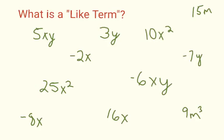The first thing we want to understand before we tackle any examples is the definition of a like term. Here I've listed a bunch of terms scattered around the screen, and we're going to identify which ones are considered like terms. A like term requires the exact same variables — so these letters x, y, m — and those variables have to have the same exponents.